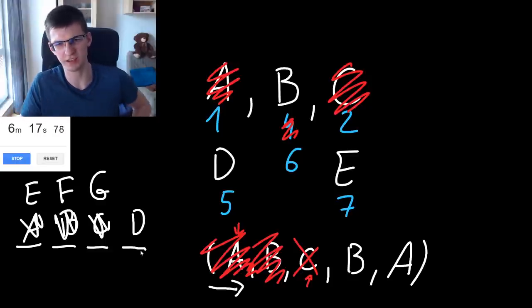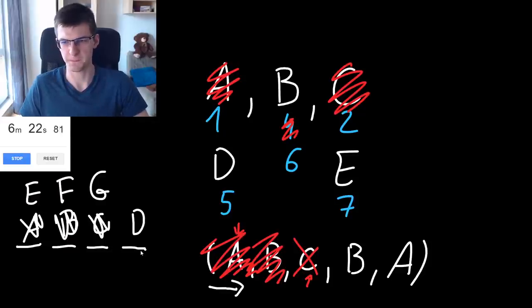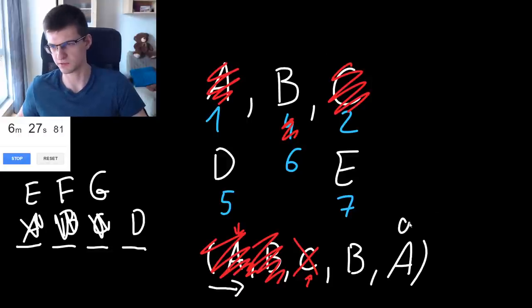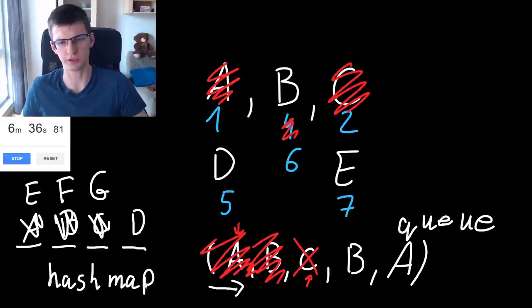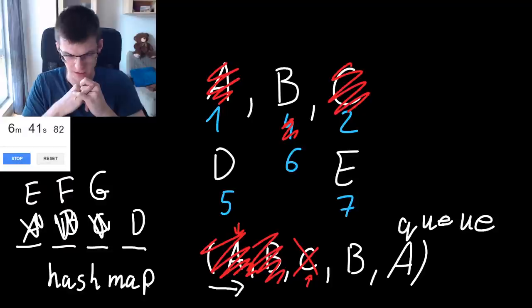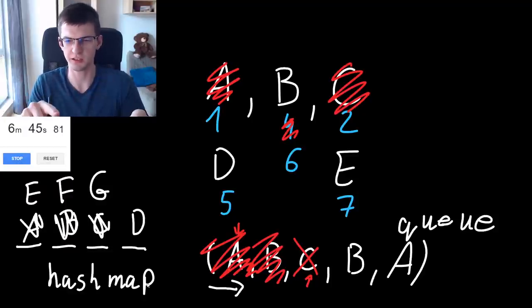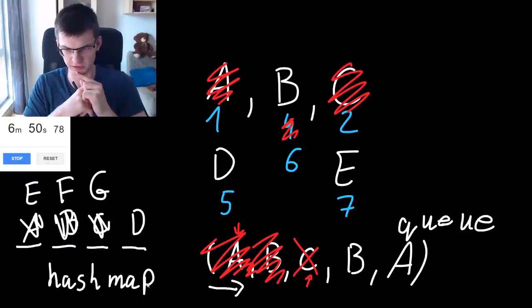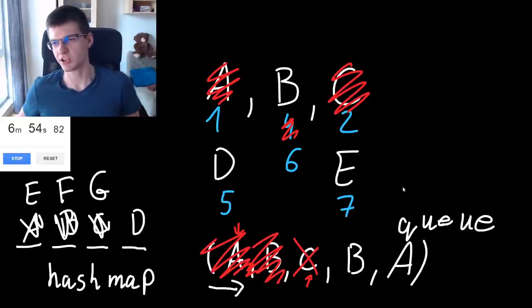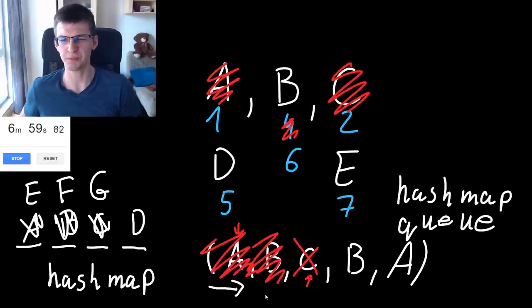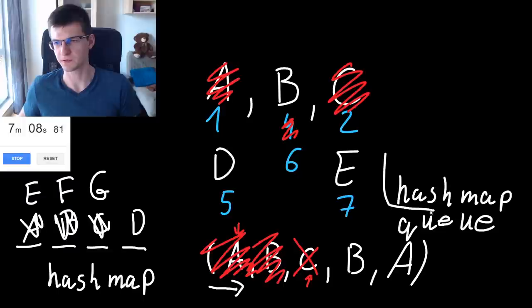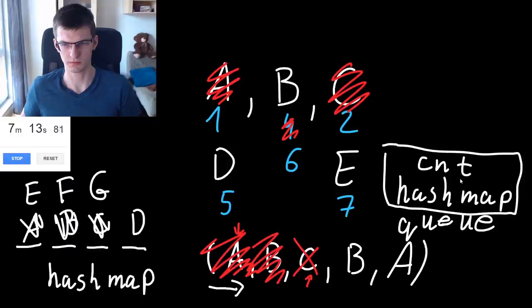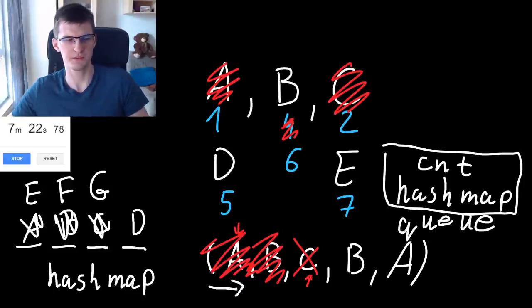So A, B, C, D, E are keys in the problem statement. My idea: there's a queue, and also a hash map for remembering the value for each key. The queue is there to know what I should replace. When I take the first element from the queue, I need to know if it is the last occurrence of this element. I need another hash map — a count map — to count how many times each element appears in the queue. If the count is 1, then I should really remove this element.